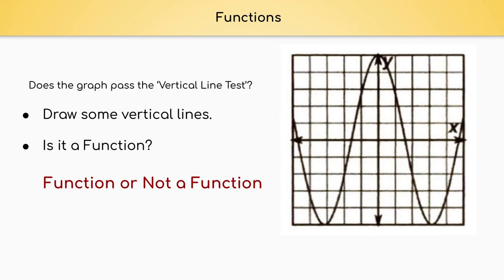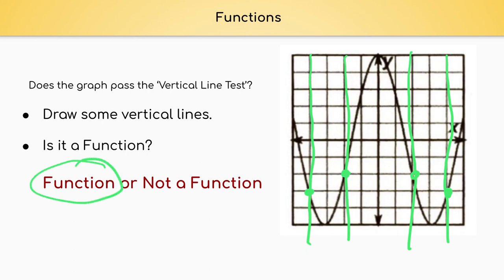Our next graph — is this graph a function or not a function? If I draw some vertical lines: goes through exactly one, exactly one, exactly one, and exactly one. As we can see in this graph, when I drew the vertical lines, each vertical line went through the graph at exactly one point. Thus, it is a function.